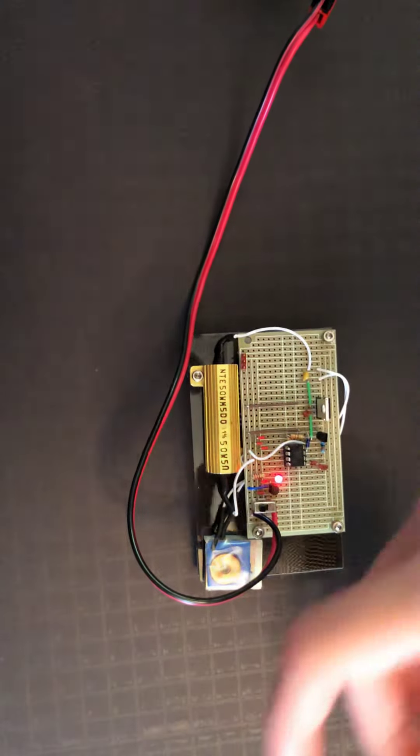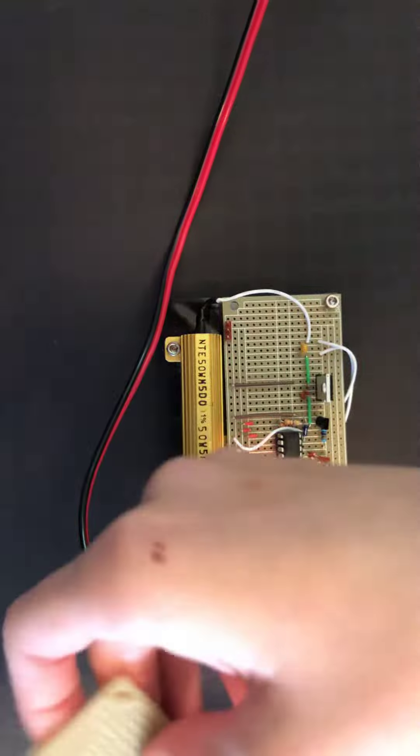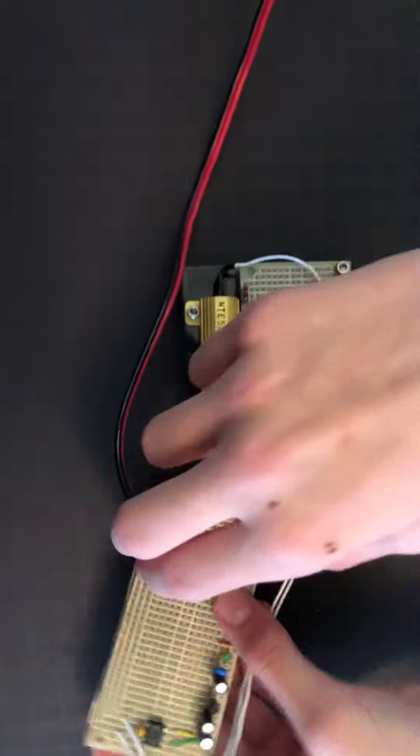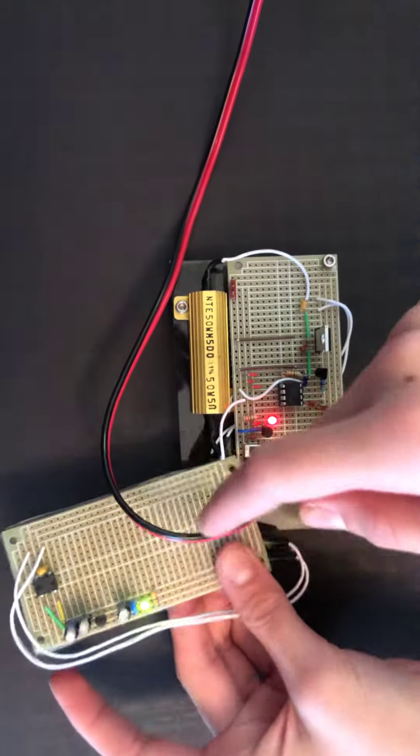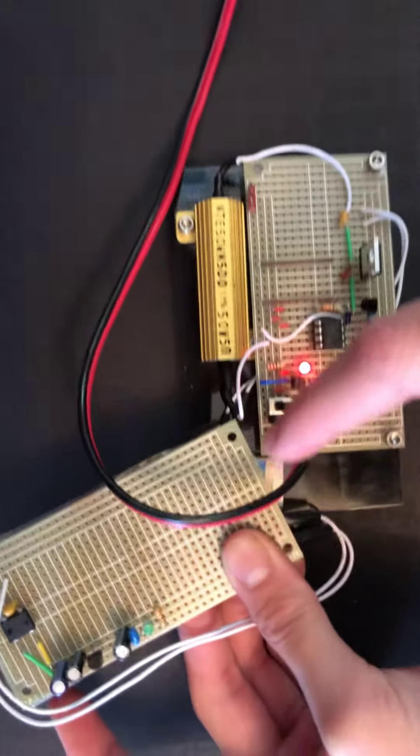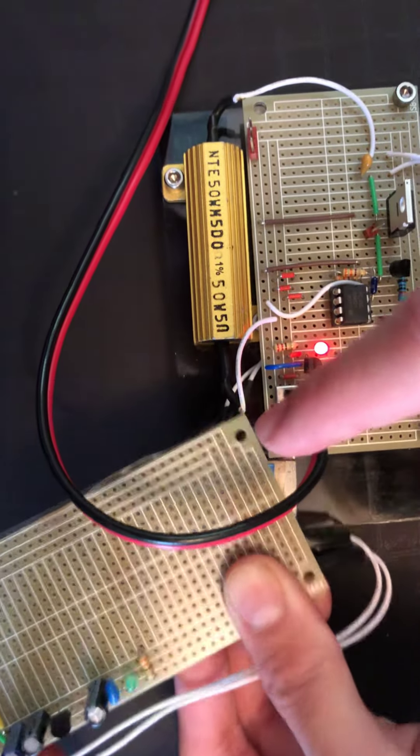It starts running the coil, and when I place the receiver end directly over it, you can see the LED lights up. The closer I get to it, the brighter the LED gets.